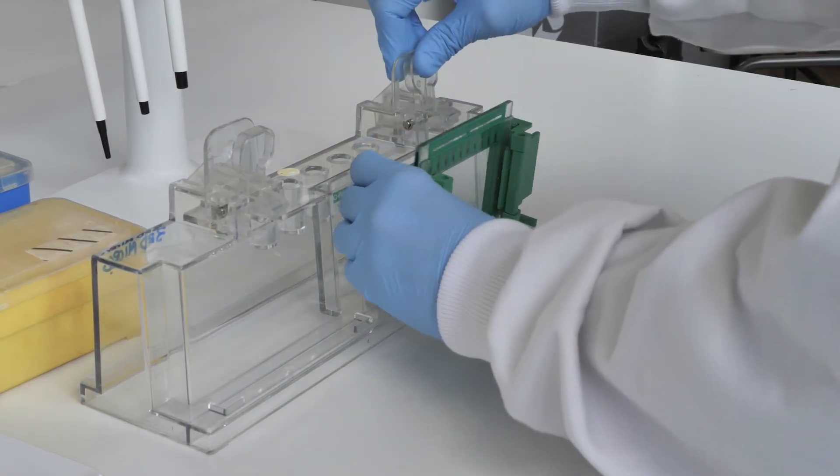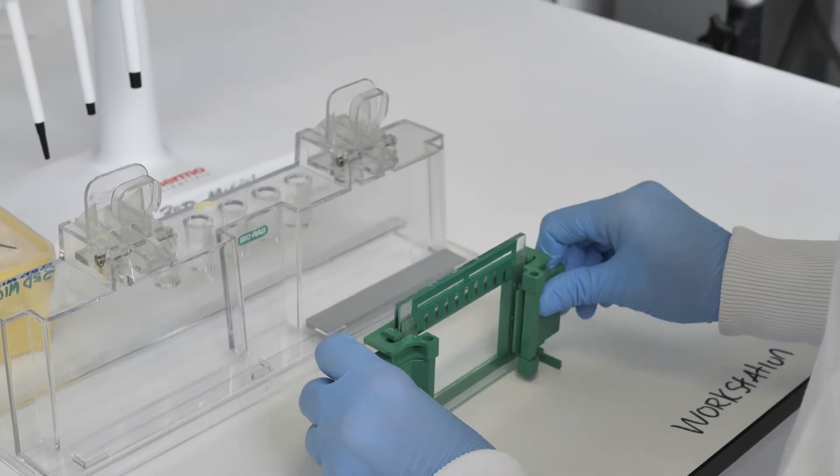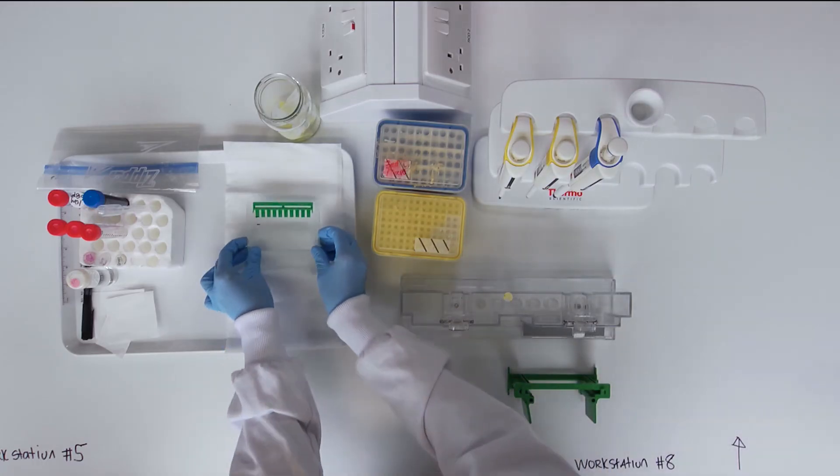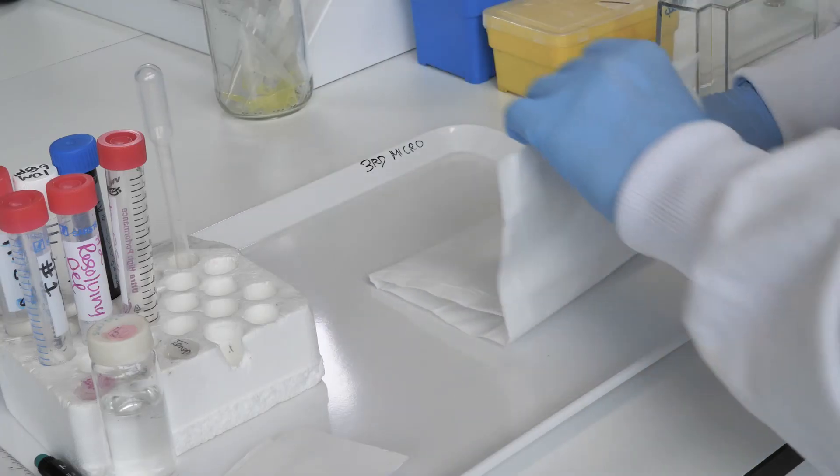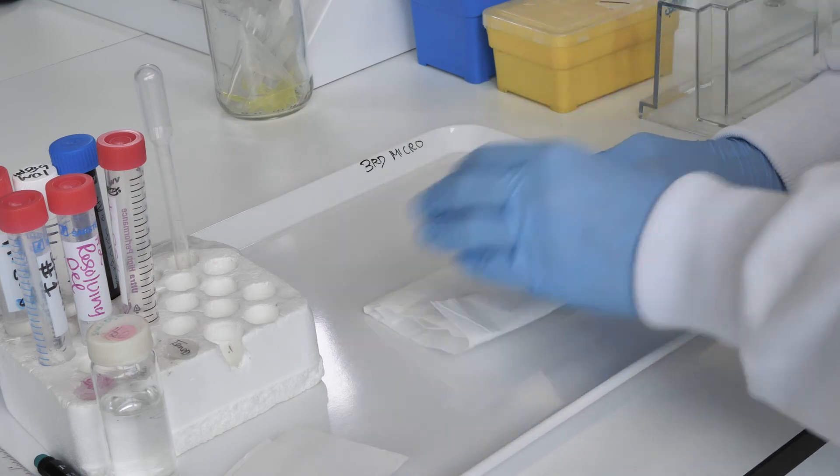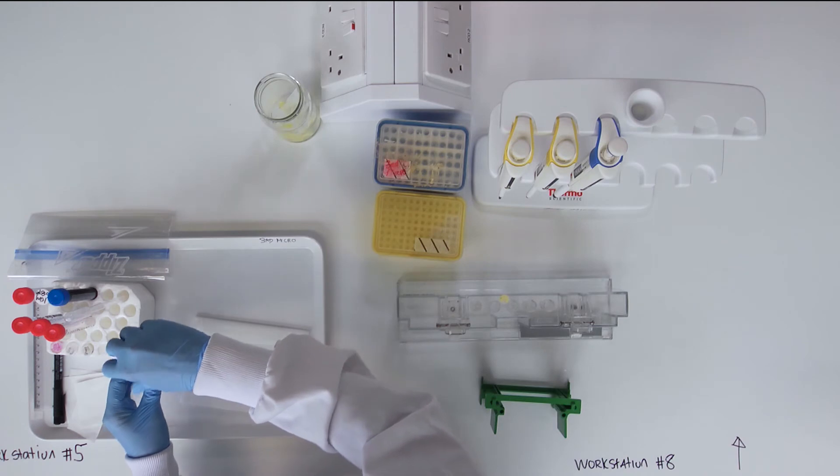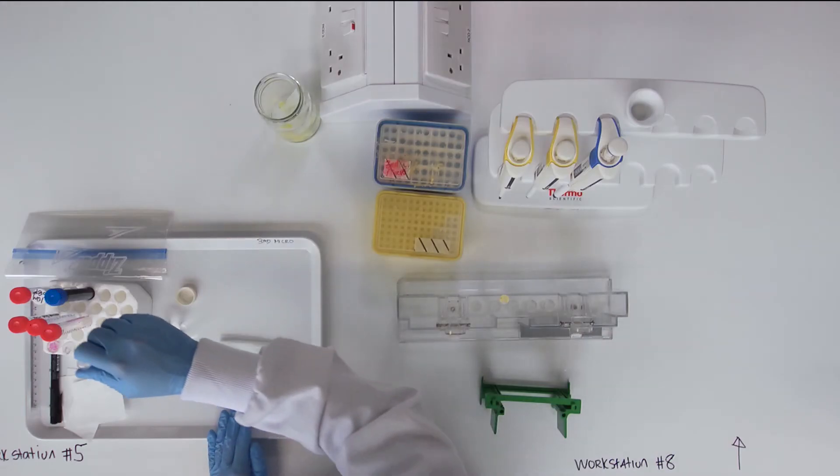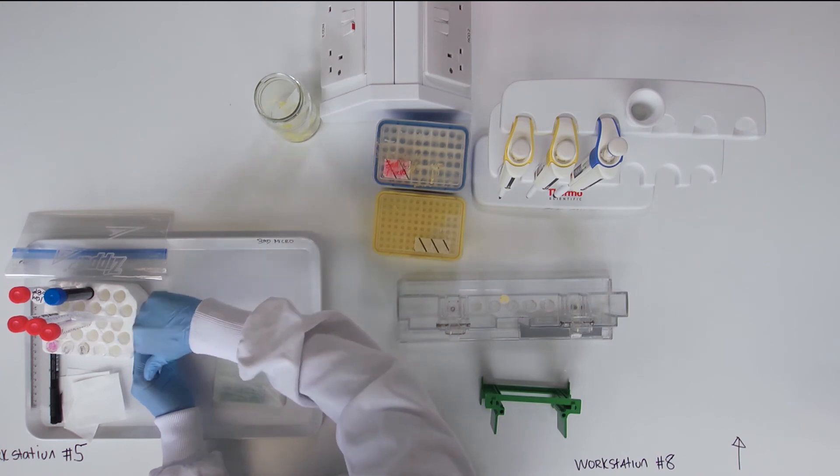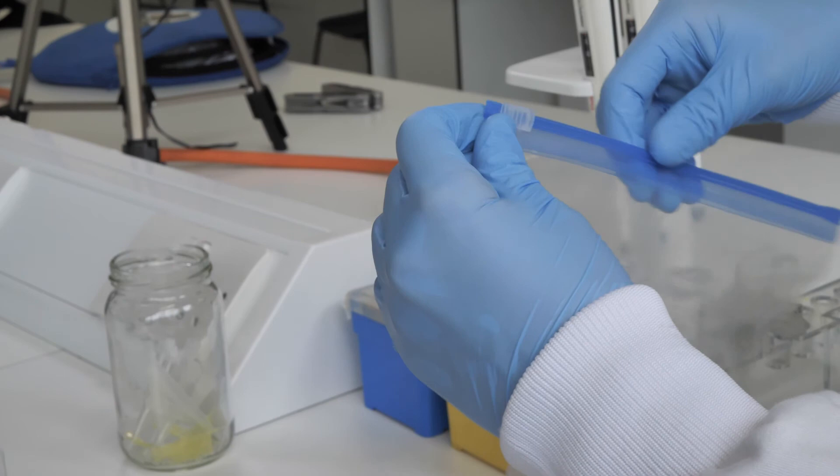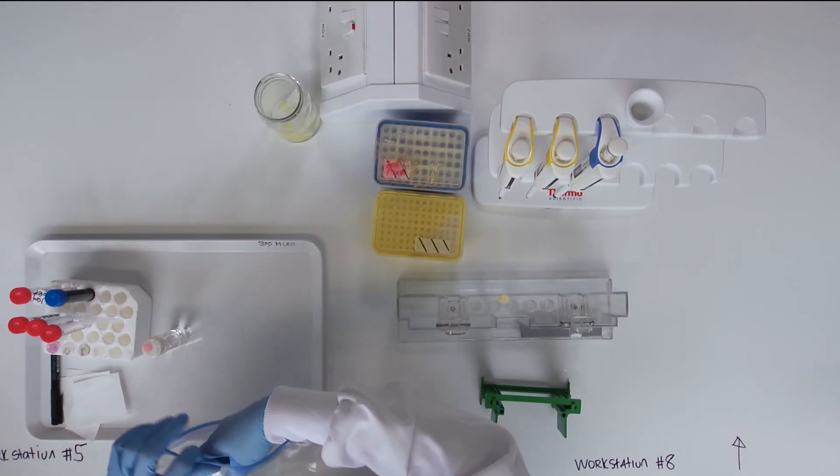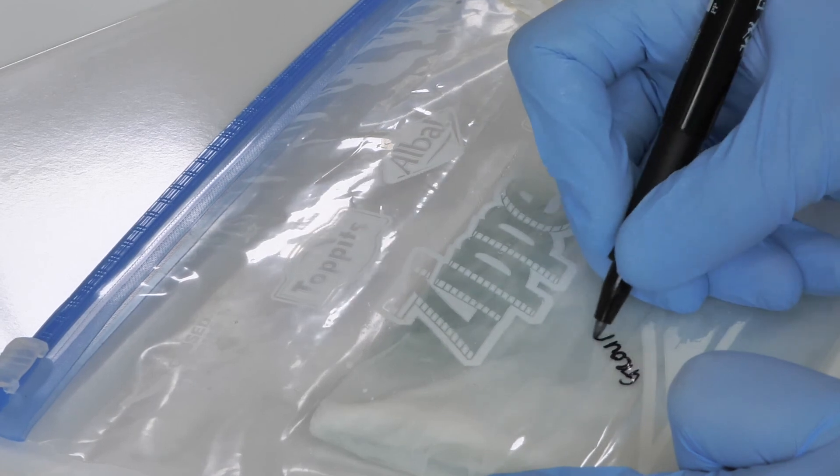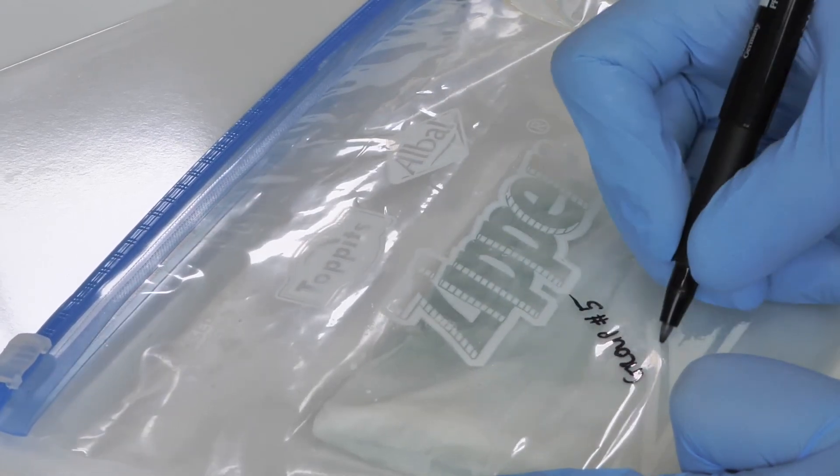Disassemble the gel casting by removing it from the stand and unclipping from casting frame. Do not remove the comb. Wrap the gel in tissue paper, concentrating on the comb end. Gently saturate the tissue paper with water. Seal in a sandwich bag to retain moisture. Write your group name on the bag or cling film. Gels will be stored at 4 degrees centigrade for use later.